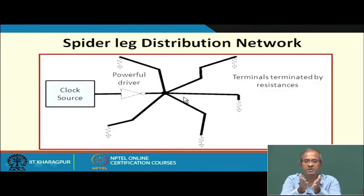The spider leg approach has drawbacks: you must terminate every clock pin with a resistance, adding area overhead. Also, to balance skew, all legs must be approximately equal in length, so you may have to route in a special way, sometimes called snaking, making a wire deliberately longer to match another, to equalize delays.